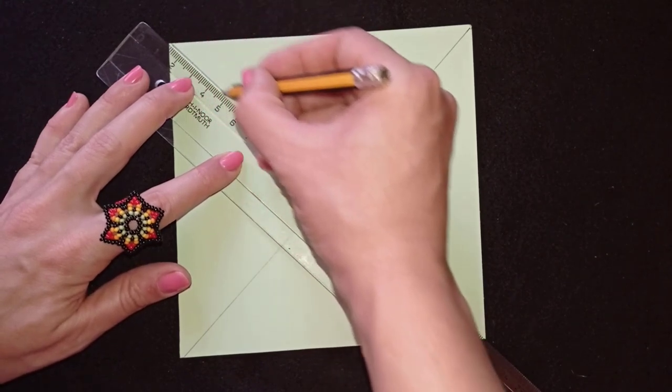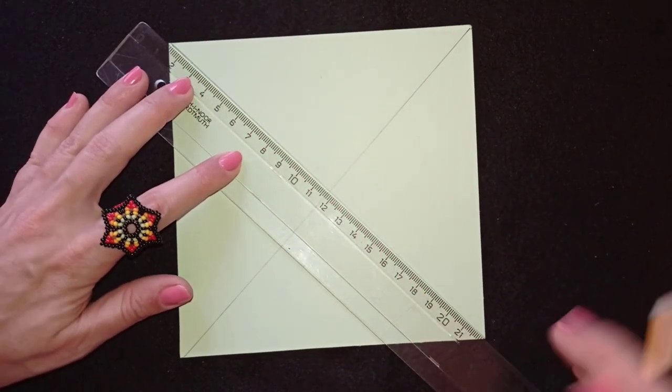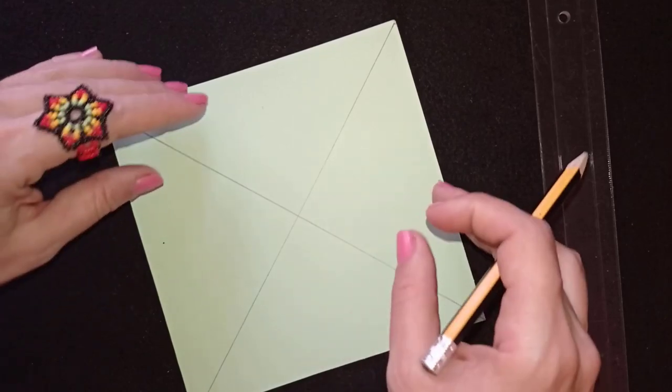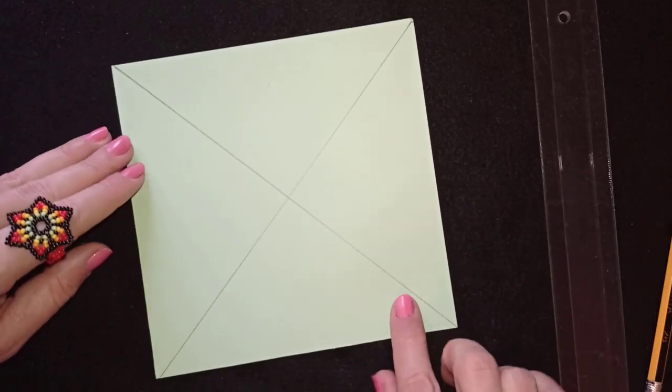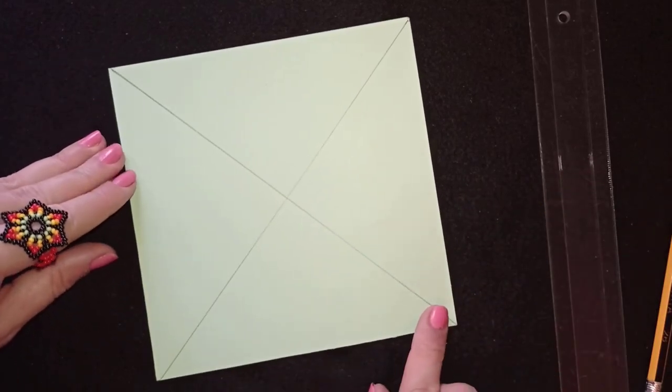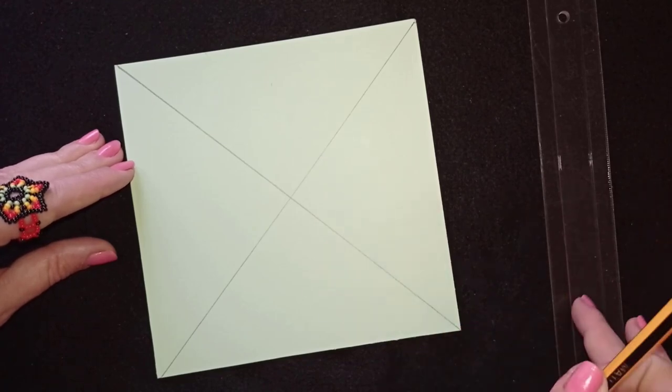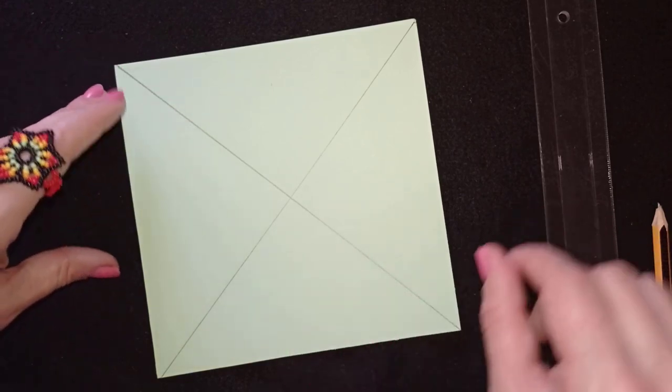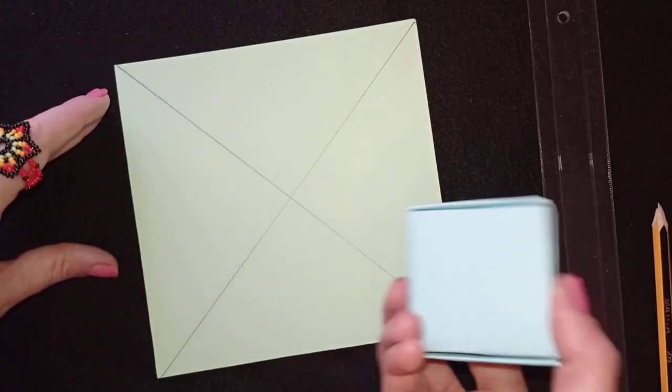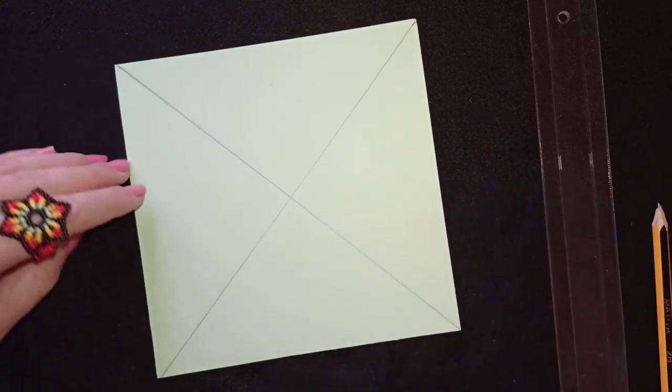I saw a lot of tutorials where people were folding the paper to find the center but this doesn't work for me. I prefer to make it like this with a pencil and a ruler because I don't want this to be folded. You see this is the bottom of my box. I don't want it folded.